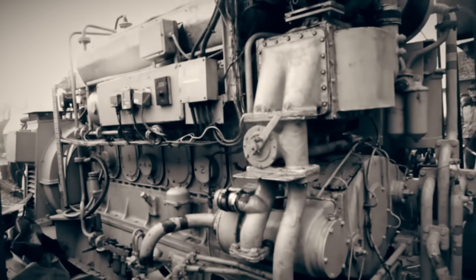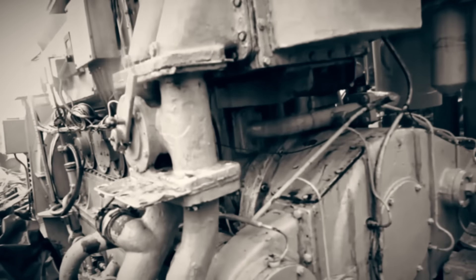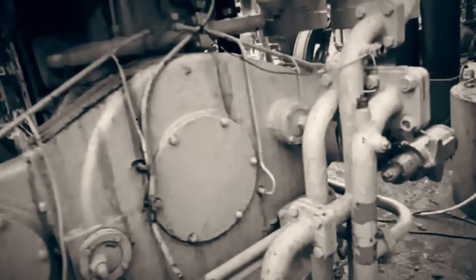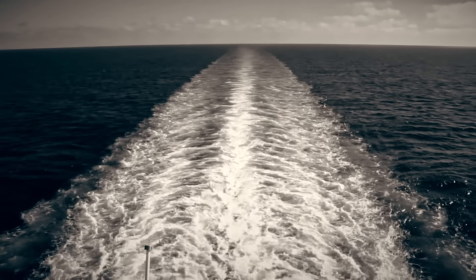Propelling the then-massive vessel were two British Mirrlees four-cycle diesel engines, driving a single-screw propeller through reduction gearing and reaching service speeds of up to 14 knots.